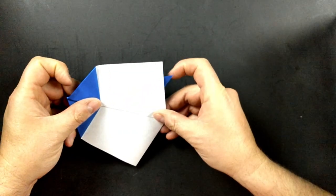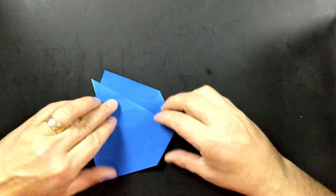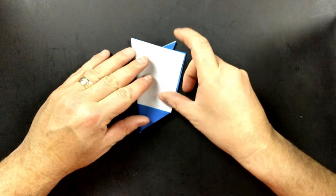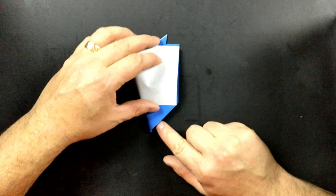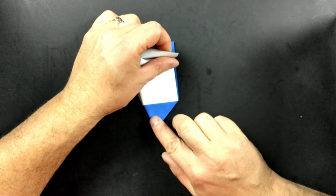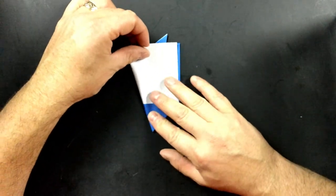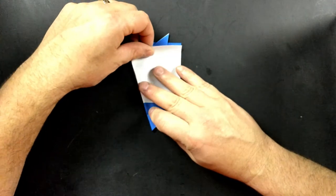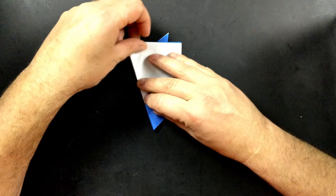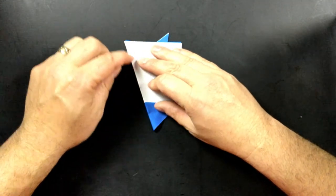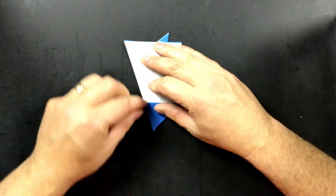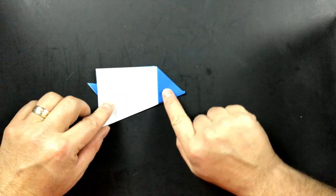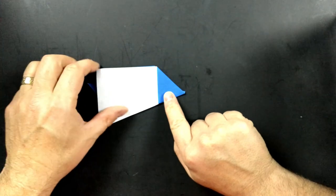And then after I have it folded on one side, I'm going to flip it over and match my fold on the other side. Now this will become the head of our Scotty dog.